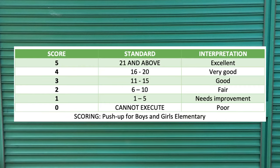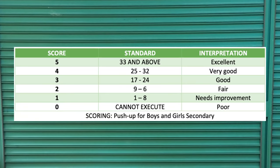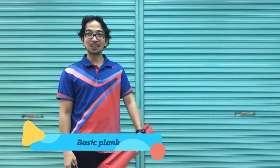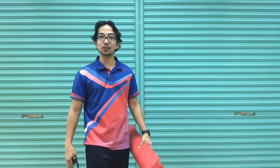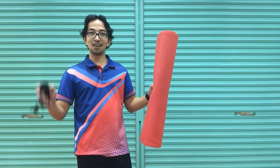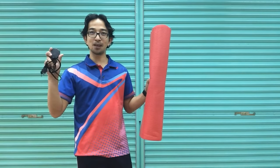This is the scoring for push-ups. Basic plank — the purpose of this test is to measure the strength of our core muscle. To do this, we need a mat and stopwatch.